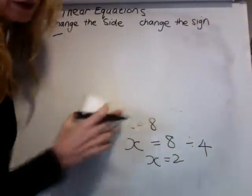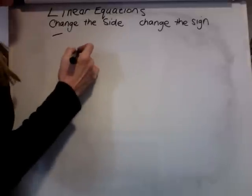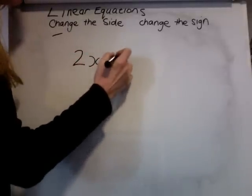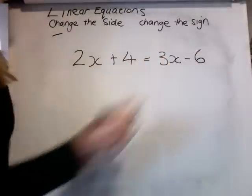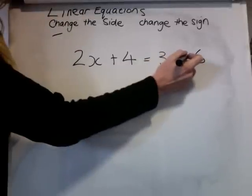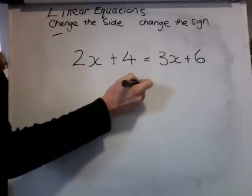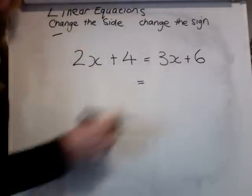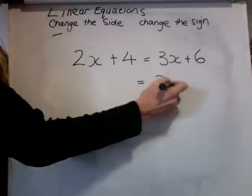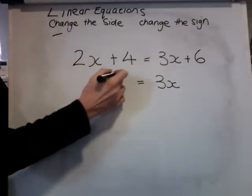Let's have a go at another one. 2X plus 4 equals 3X plus 6. Which side shall we have the X's on? I've got 2X's on this side, 3X's on that side. That side has the most. Put them over there. So we need to leave that where it is, and the 4 can stay here.